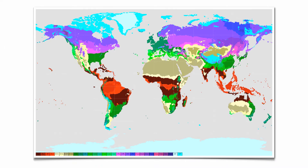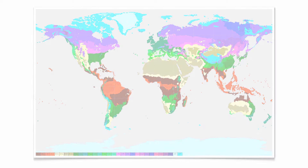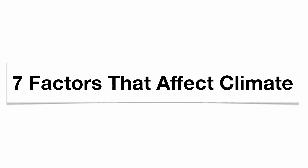Within this map you can see all the different climatic conditions on the planet and all the different zones. Now let's talk about some of the factors that are going to influence some of these zones — there are going to be seven of them that we'll talk about.